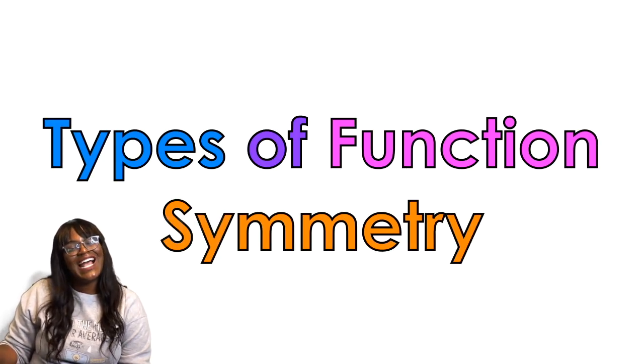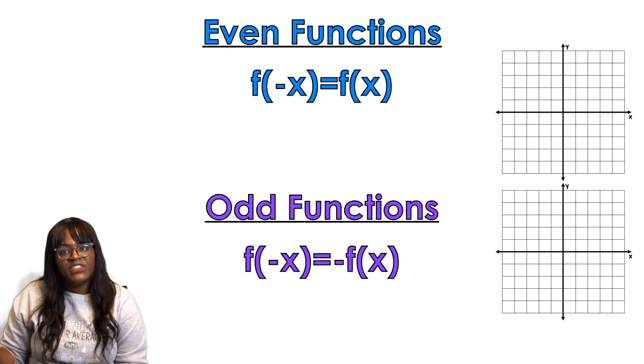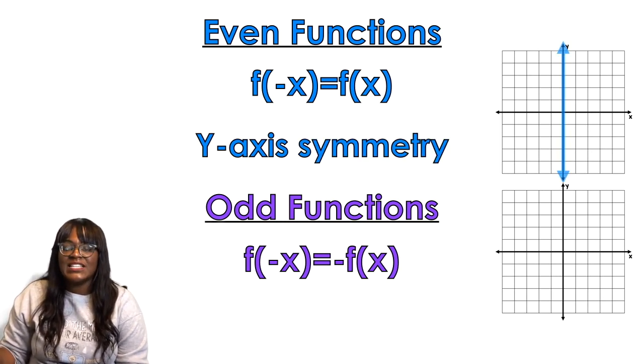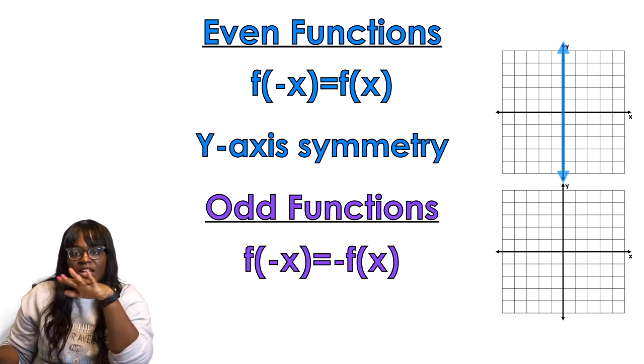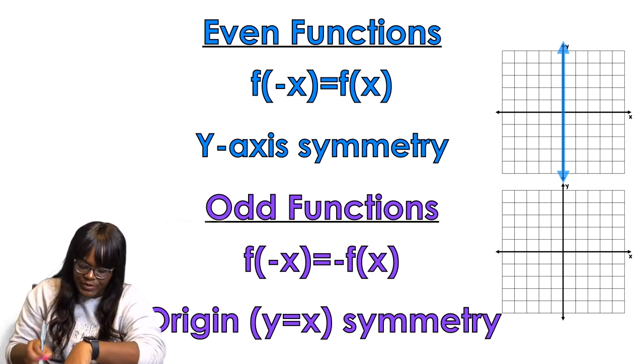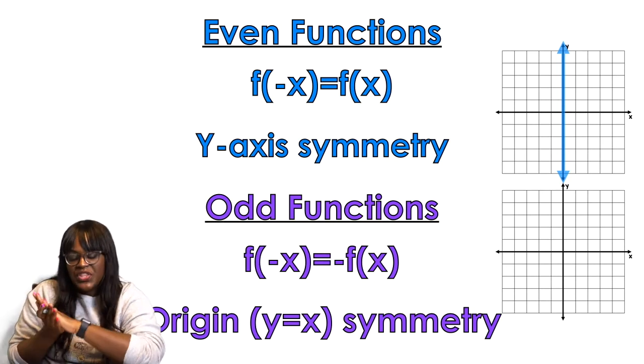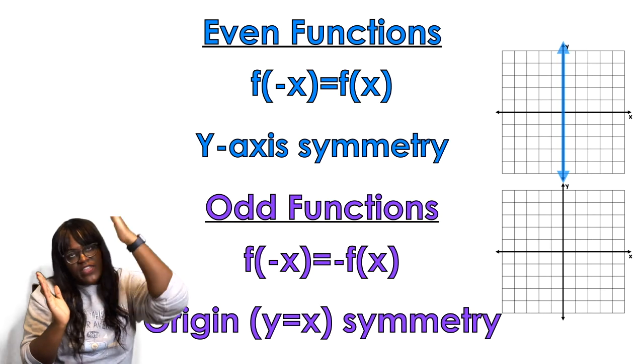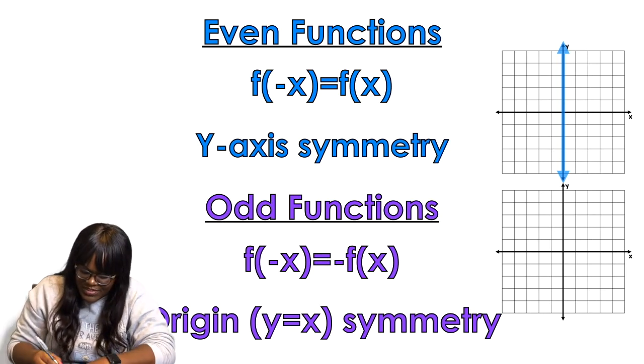Now we're gonna talk about types of function symmetry. This is the... You're still determining if the function is even or odd. But we're determining if the function is even or odd by the type of symmetry. So when we're looking at even functions, even functions have y-axis symmetry. So that basically means that the y-axis, if I folded the picture on the y-axis, it would be the same on the left, same on the right. Now then you have odd functions, which have origin symmetry or y equals x symmetry. So that means if I folded it on the diagonal, that means that it would be... If I folded it on the diagonal, it would be mirror on the top over the bottom, kind of. I hope that made sense.